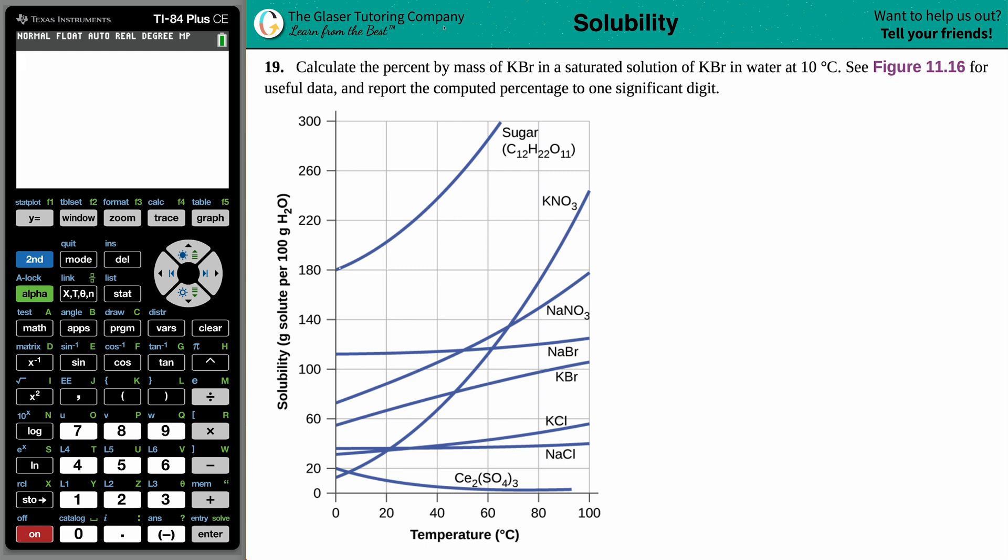Number 19. Calculate the percent by mass of KBR in a saturated solution of KBR in water at 10 degrees Celsius and see figure 11.16 for useful data and report the computed percentage to one significant digit. Okay. So I pulled up figure 11.16 right here. This is basically your solubility charts.